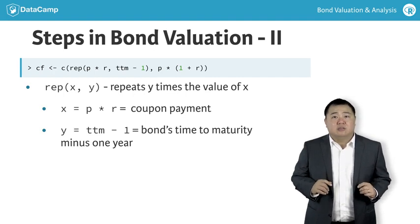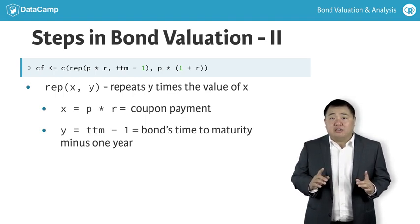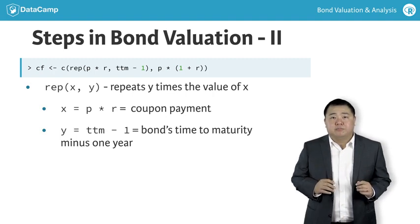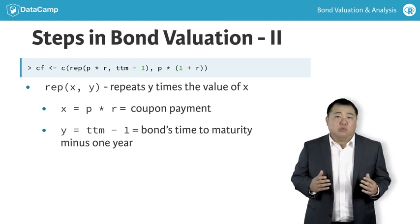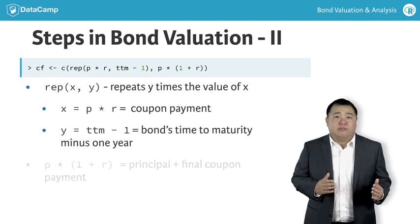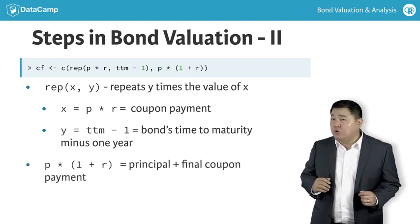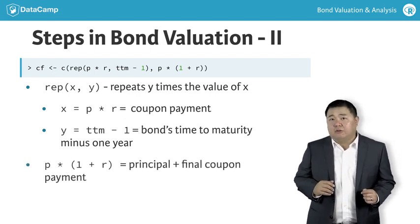Then, the cash flow vector's final element should equal the last coupon payment plus principal. Mathematically, this is equivalent to the par value times 1 plus the coupon rate R.